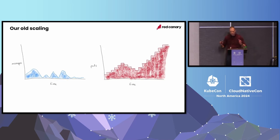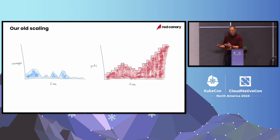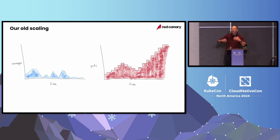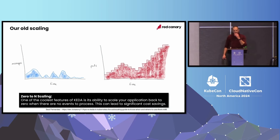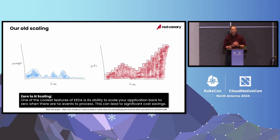Our old autoscaling mechanism — this is a graph, an artist's representation of a graph — shows the messages coming into our components over time and our autoscaling. The red is the number of pods we had. The problem was we scaled really, really slow. We wanted to save money by contracting our cluster at the end of the day. I found this great quote online: one of the coolest features of KEDA is its ability to scale your application back to zero when there are no events to process. This can lead to significant cost savings. That's exactly what we wanted.